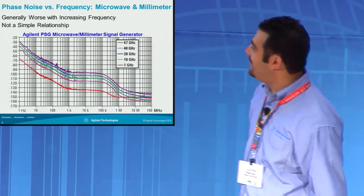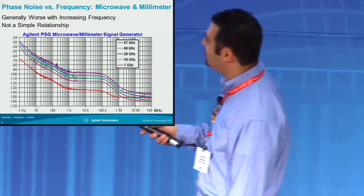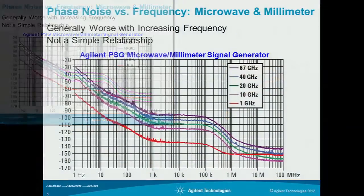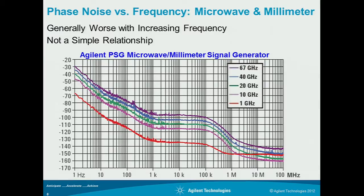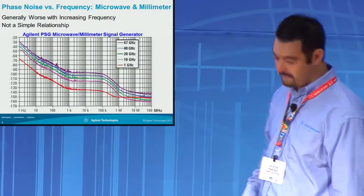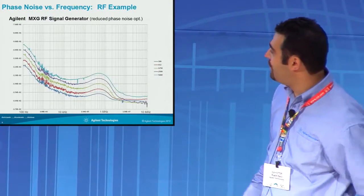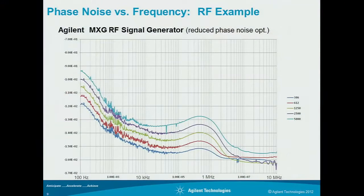Another example is our PSG, where we're showing a frequency versus phase noise relationship. The general trend is that as you go to increasing frequency, the phase noise degrades proportionally. However, it's not always a simple relationship. With our MXG, for example, across the frequency range from 300 megahertz to 5 gigahertz it looks pretty symmetrical, but then broadband noise does vary with frequency a bit — so it's not always a direct relationship.